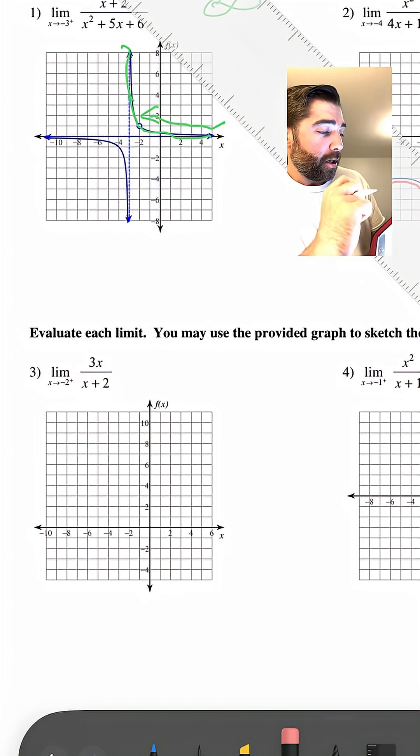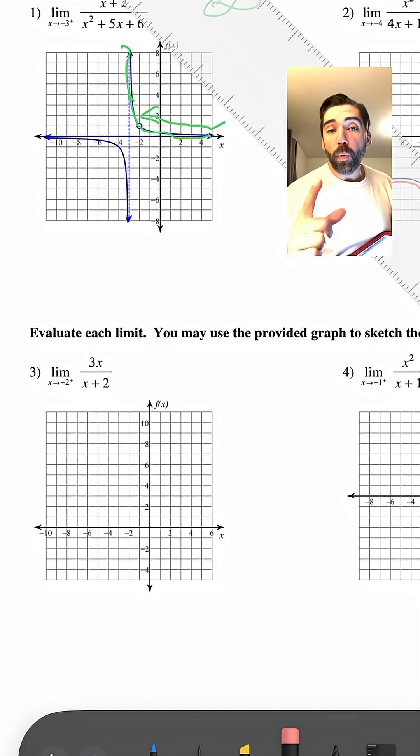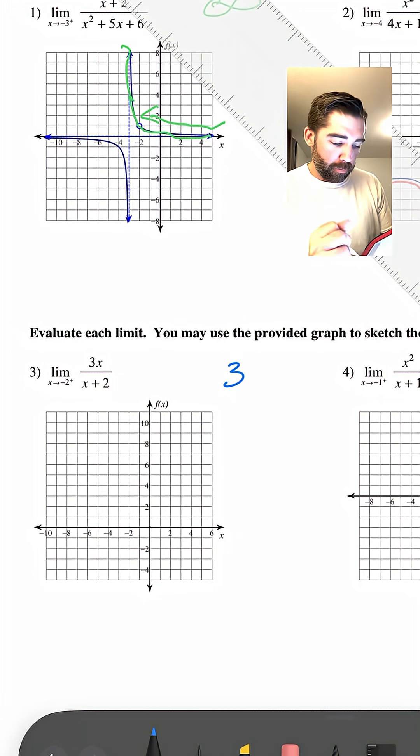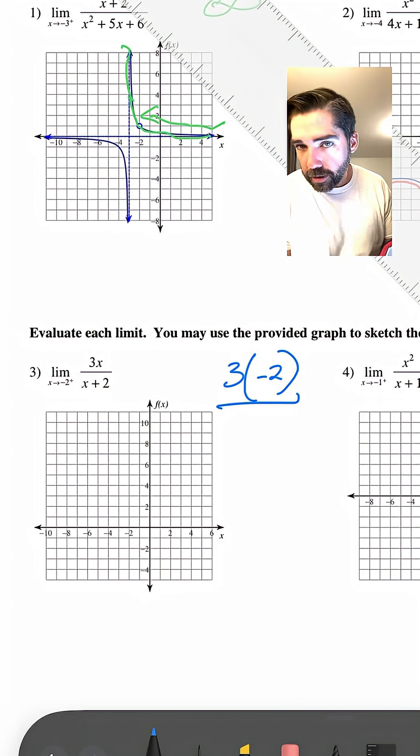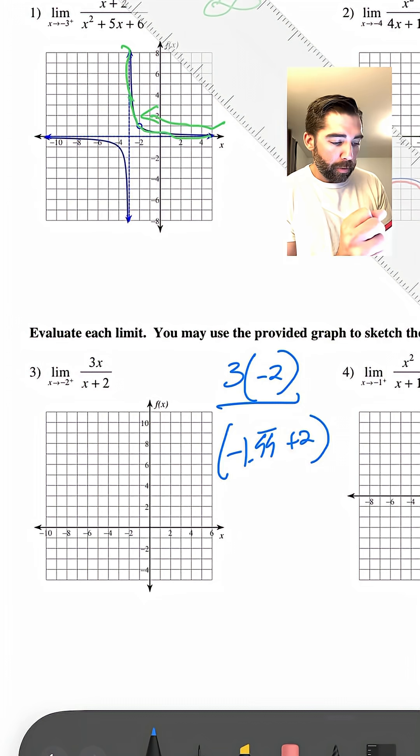All right. So if we think negative 2 from the right, well, if we use like negative 1.99999999, what's going to happen? So this would be 3 times negative 2, basically, right, over that's a negative 1.999 repeating plus 2.